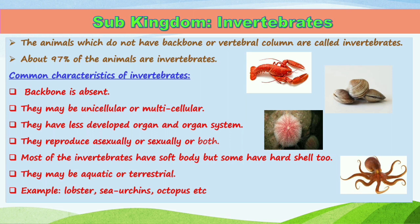Invertebrates may reproduce asexually, sexually, or by both methods. Most invertebrates have a soft body, but some have a hard shell too. Regarding habitat, they may be aquatic or terrestrial. Examples include lobster, sea urchin, octopus, and scorpion.